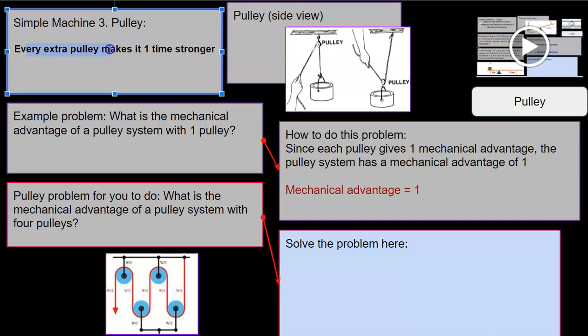Every extra pulley makes it one time stronger. Very easy. This is the easiest, in my opinion, simple machine to learn because to find the mechanical advantage, you just count the pulleys. In layman's terms, that's one pulley, so this system has an advantage of one.